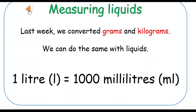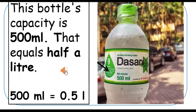One liter is the same as 1,000 milliliters. This bottle's capacity is 500 milliliters, that equals half a liter.